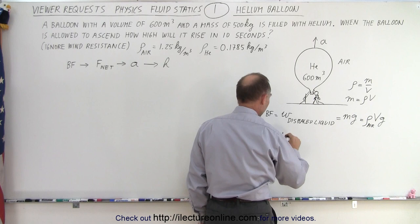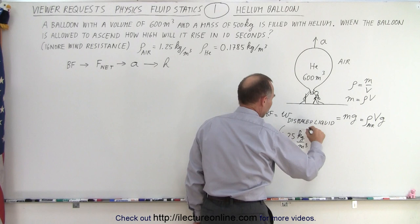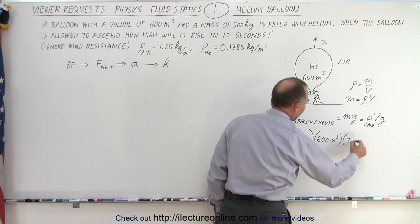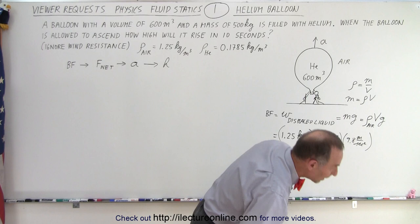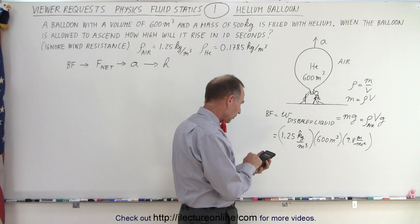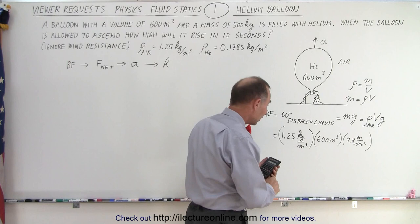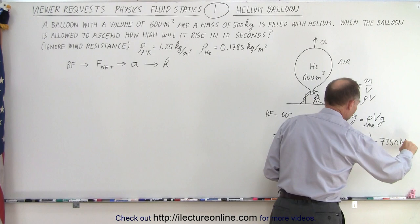So the buoyancy force equals the density of air, which is 1.25 kilograms per cubic meter, times the volume of the balloon, 600 cubic meters, times g, 9.8 meters per second squared. That gives us 1.25 times 600 times 9.8 equals 7,350 newtons.